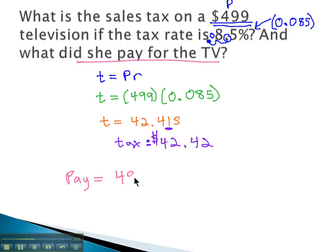She had to buy the TV for 499, and in addition to that, she had to pay the tax, which was 42.42. And when we add those together, we end up with she is paying for this television set $541.42.